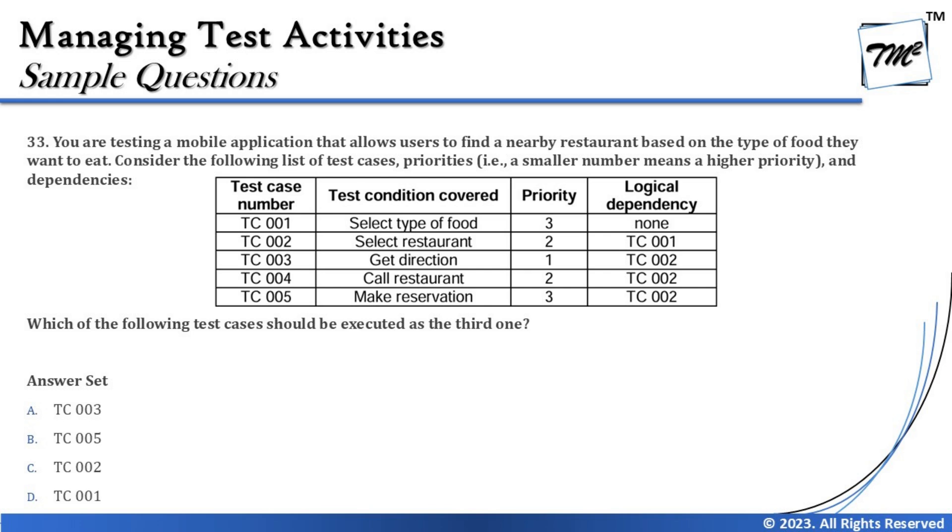We can quickly recall that there could be a priority, which is the first thing to always consider in a test execution schedule. The order is: high independent, then high dependent, then medium independent, then medium dependent, then low independent, and low dependent. The table has five test cases: Select type of food, Select restaurant, Get directions, Call restaurant, Make reservation — but these names are purposefully given to distract you.